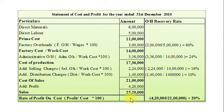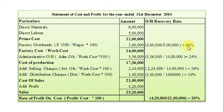Now we will calculate overhead recovery rates, which will be used for the estimated cost sheet for the year 2011. Factory overheads recovery rate = Factory overheads ÷ Wages × 100 = Rs. 3,00,000 ÷ Rs. 5,00,000 × 100 = 60% of wages. Administration overheads recovery rate = Administrative overheads ÷ Work cost × 100 = Rs. 3,36,000 ÷ Rs. 14,00,000 × 100 = 24% of works cost.